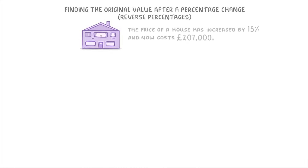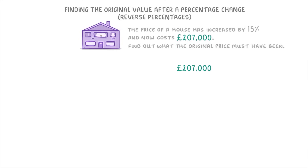For example, let's take this question, where we're told that the price of a house has increased by 15%, and now costs £207,000, and we're being asked to find out what the original price must have been. So in this scenario, the £207,000 is the new price, after some original price, which we don't know yet, has been increased by 15%.